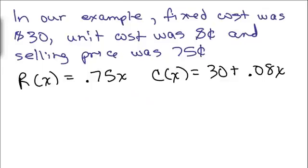In our example, the fixed cost was $30, the unit cost per tea bag was 8 cents, and our selling price was 75 cents. So our revenue function was R(x) = 0.75x, our cost function was 30 + 0.08x.